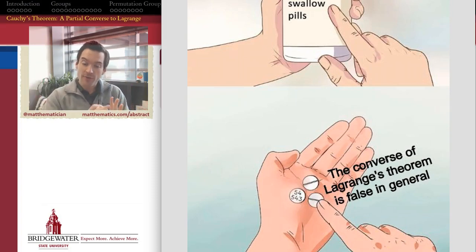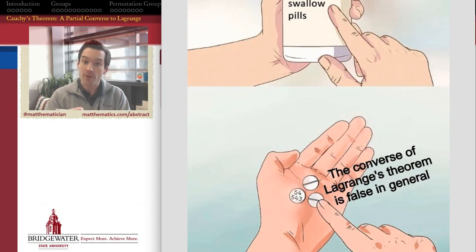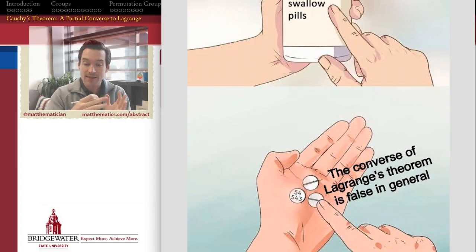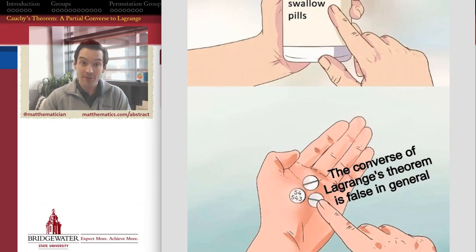But in order for that converse to be guaranteed to be true, we need some additional assumptions on our group. In this video we'll see probably one of the most valuable assumptions that lets us get a partial converse to Lagrange's theorem. This converse is so important that it gets a name of its own — it is called Cauchy's theorem.